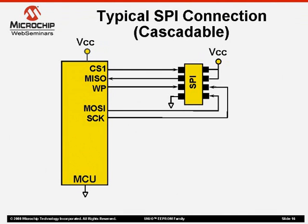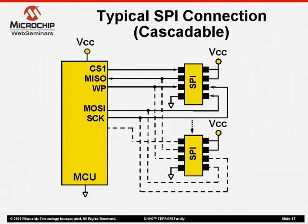Now that you've seen a typical SPI configuration, let's see what happens when multiple memory devices are placed in parallel on a simple SPI bus. At first it looks like you only have to connect the additional devices to the existing bus signals, but you should also be concerned with the additional IO ports needed for the chip select signals. A separate chip select is needed for each device on the bus, so multiple devices will definitely impact MCU resources.